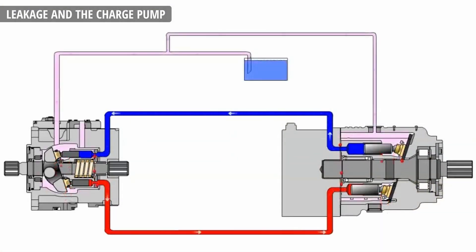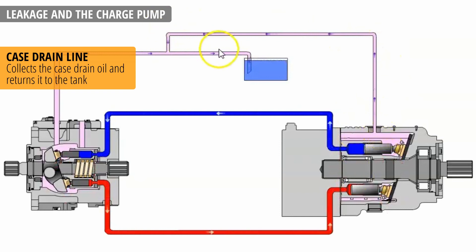To collect that oil, there's another line, obviously called a case drain line. It collects the drain oil and returns it to the oil tank.